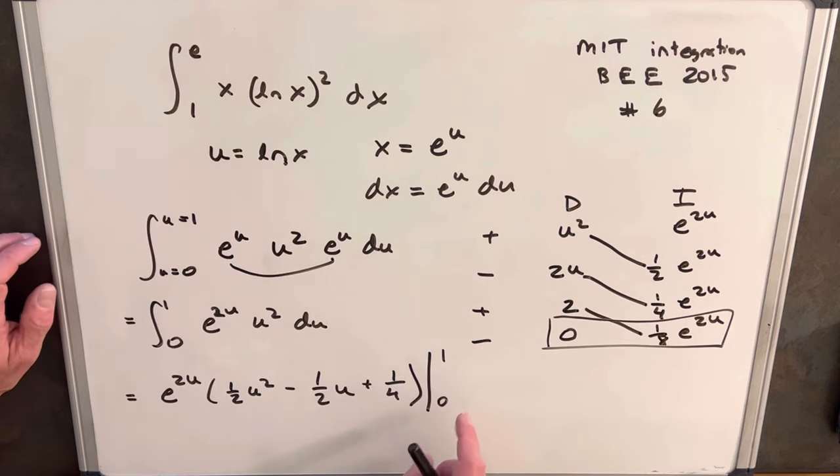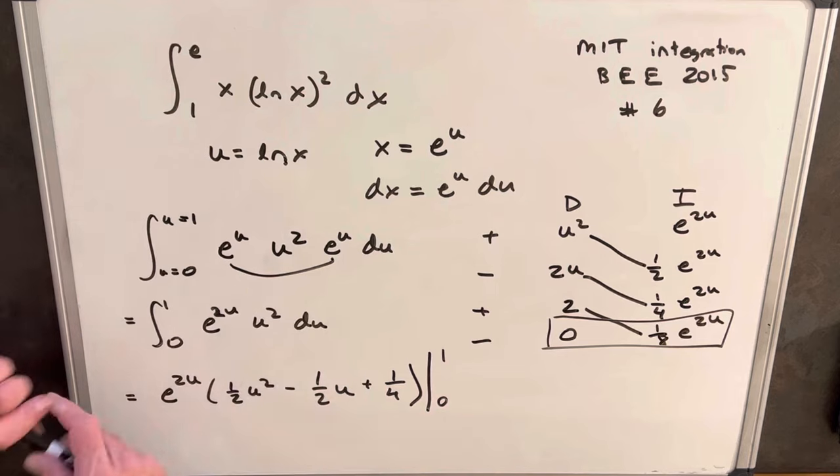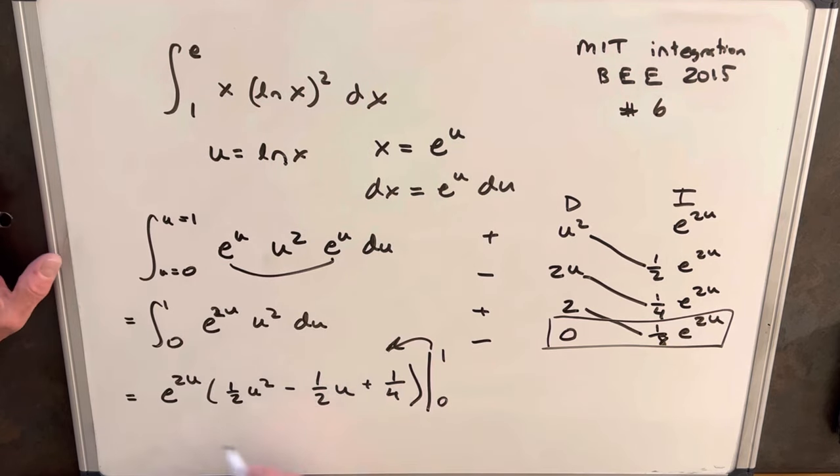And then we just need to evaluate these two endpoints. So first we'll plug a 1 in here. So we're going to have e to the 2 times 1, so we just have e squared. 1 squared is just going to be a half. Half times 1 is 1, so we'll have minus a half. And then just plus a quarter.